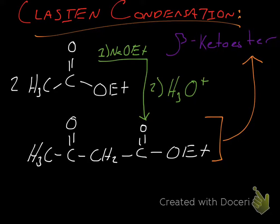In this video I'm going to talk about the reaction mechanism behind a Claisen condensation reaction. A Claisen condensation reaction, not to be confused with a Claisen rearrangement reaction, is a reaction in which one takes either two esters or an ester and another carbonyl compound in the presence of a strong base to form either a beta-keto ester or a beta diketone.